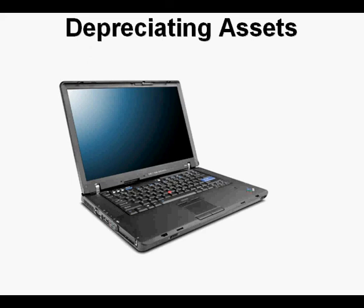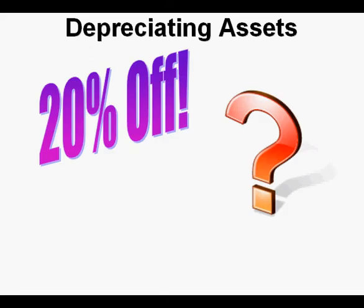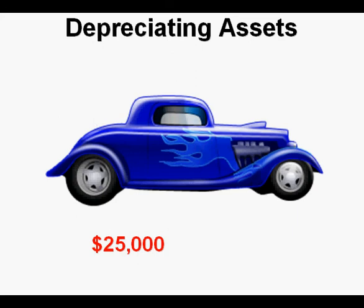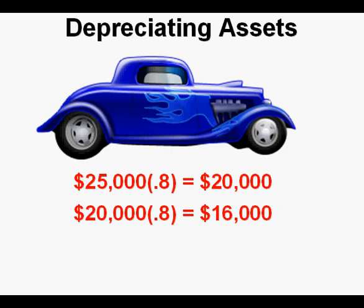The thing to remember with depreciation is the same thing to consider when looking at sale prices. When something is 20% off, that means 20% off the full price — 100% minus 20 equals 80 — so the sale price is 80% of the original. It's the same with depreciation. If this car depreciates at an annual rate of 20%, a car worth $25,000 this year will be worth $25,000 times 0.8, or $20,000, one year later. One year after that, its value will be $20,000 times 0.8, or $16,000.